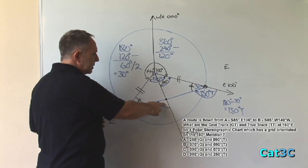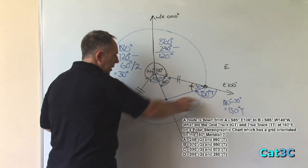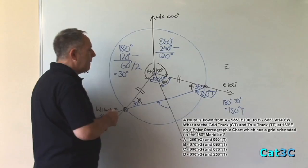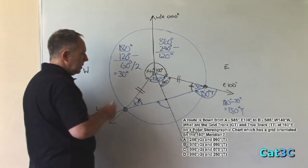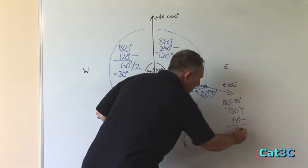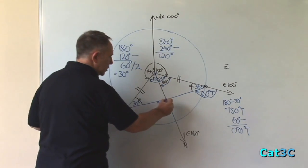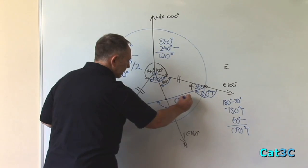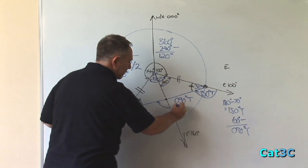Therefore, the angle at this position, as we can see is smaller, must be 150 minus the 60 degrees, equals 090 degrees true. So at this point, the true track is 090 true.